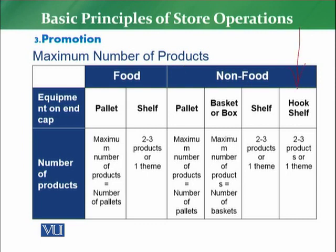For example, starting with non-foods: which equipment will be used? For products related to clothing, you are using hooks and shelves — two to three products are being used and you are following one theme. For some non-food products displayed on shelves, there should normally be two to three products or one particular theme. In a third case in non-food, display happens in the form of a basket or box — for example, copy paper comes in box form. You have to display the maximum number of products or maximum number of baskets.